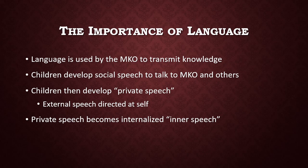Starting around age three, children begin developing what Vygotsky called private speech — external verbal speech directed at themselves. He argued it has an intellectual function: guiding, directing, strategizing, and organizing their ideas. They've been used to receiving this verbal support from the more knowledgeable other, and now they can supply it to themselves. Private speech develops regardless of culture but develops faster in children in a highly verbal environment. It gradually fades by about age seven, becoming internalized into inner speech that serves the same function.